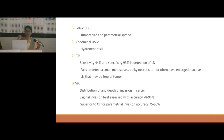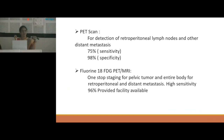MRI is better than CT, helping to know the distribution and depth of invasion in the cervix. Vaginal invasion is best assessed with accuracy around 78 to 94%, and MRI is superior to CT for parametrial invasion with accuracy of 75 to 90%. PET scan detects retroperitoneal lymph nodes and other distant metastasis with sensitivity of 75% and specificity around 98%. If available, it is always preferable to go for positron emission tomography scan.